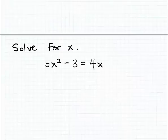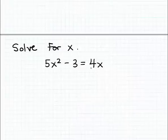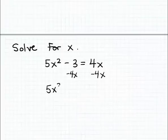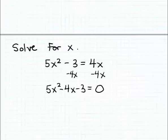There are other techniques for solving quadratic equations as well, but these are the two most likely to be used. In either of those techniques — factoring or using the quadratic formula — the equation needs to be set equal to zero. So I'm going to do that by subtracting 4x from both sides of the equation, which makes the right-hand side zero. That gives us 5x squared minus 4x minus 3 is equal to zero.